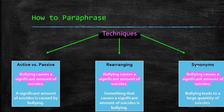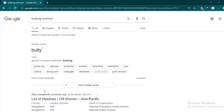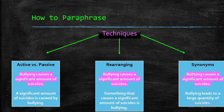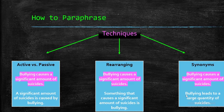Sometimes it's better to use synonyms. For example: 'bullying leads to a large quantity of suicides' — instead of 'significant amount,' you say 'large quantity.' However, using synonyms has drawbacks. If you wanted a synonym for 'bullying,' you could write 'persecuting,' 'oppressing,' or 'tormenting,' but in this context the word 'bullying' is very important because it symbolizes a specific type of torment. You cannot just say 'oppression leads to suicides' — it's not specific to bullying. Bullying is just one form of oppression.